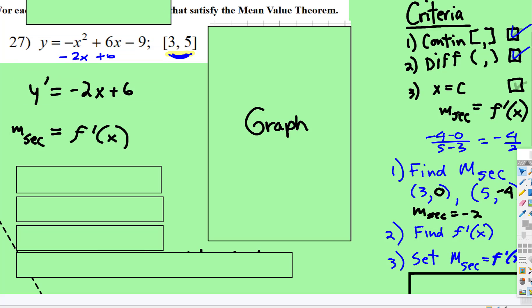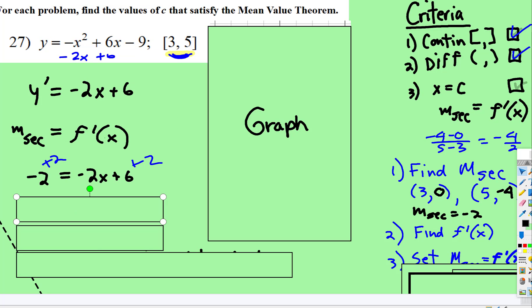Now we're going to set m_secant equal to the derivative. So -2 = -2x + 6. And we're going to solve for x. So 0 = -2x + 8.